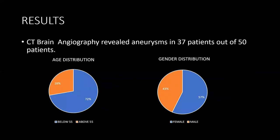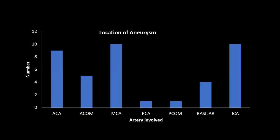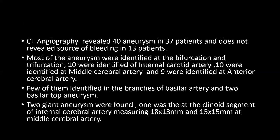Males accounted for 43%. A total of 40 aneurysms were identified: 38 were saccular and 2 were fusiform. Regarding location, aneurysms were most commonly found at the MCA and ICA — 10 each — followed by ACA with 9, another ACA branch with 5, basilar artery with 4, and PCA with 2.